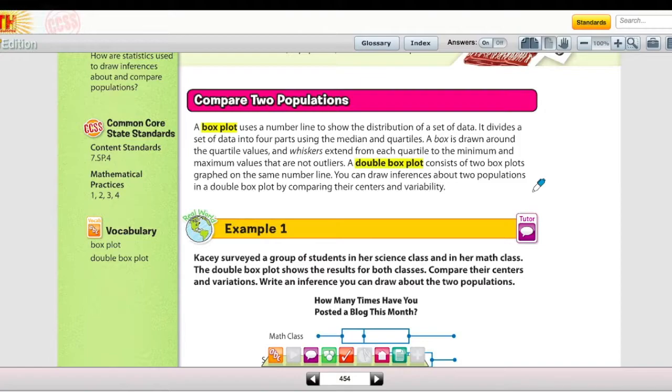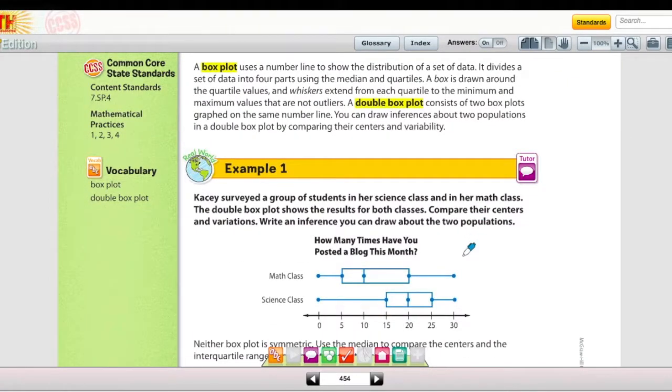For Lesson 10-4, you have two vocabulary words. A boxplot uses a number line to show the distribution of a set of data. It divides a set of data into four parts using the median and quartiles. A box is drawn around the quartile values, and whiskers extend from each quartile to the minimum and maximum values that are not outliers. Here in the example, we have the median drawn right here, and then a box is drawn around the quartile values, quartile 1 and quartile 3, and then the whiskers extend to the maximum and the minimum.